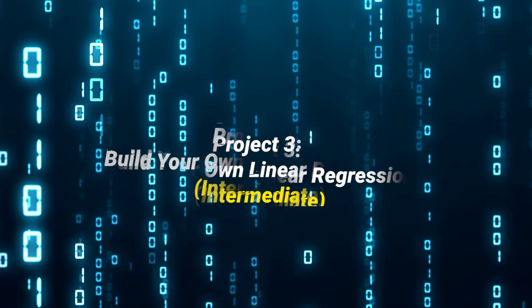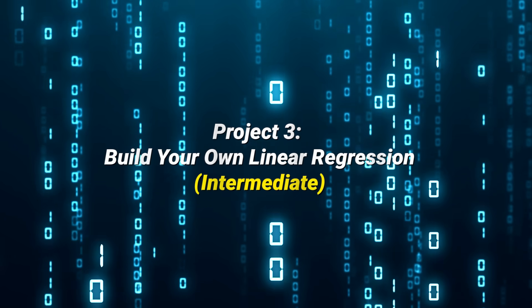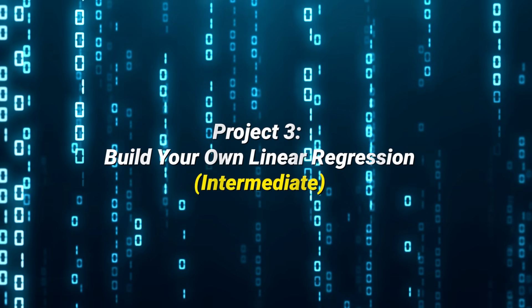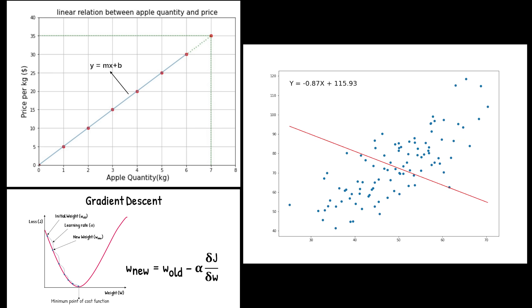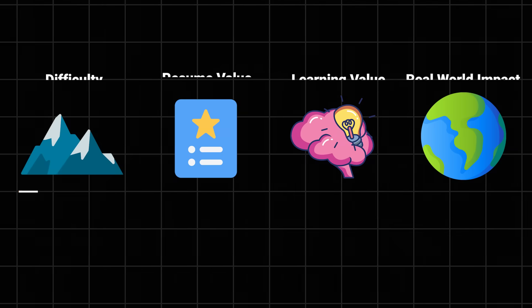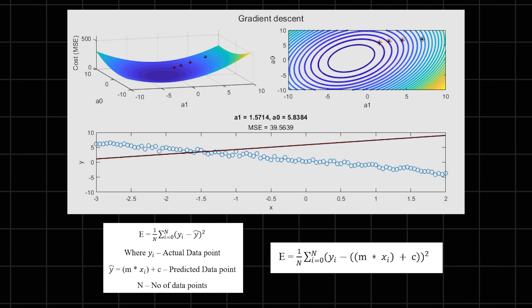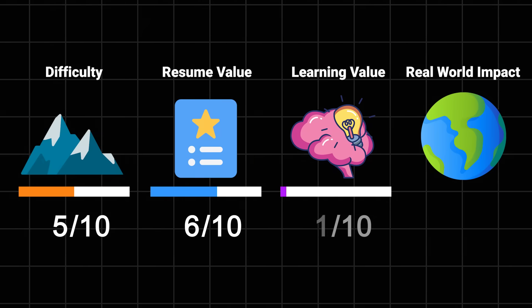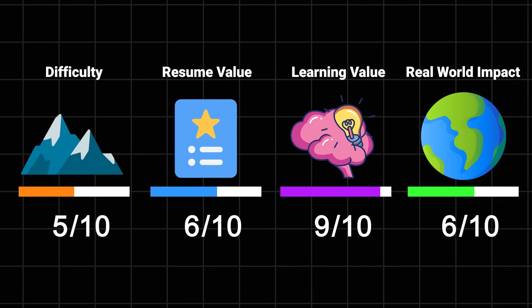Build your own linear regression. Wait, what? Why are we jumping to this already? Because if you can't understand the basics of how machine learning works, good luck explaining to your boss why your deep learning model is making weird predictions. You'll build linear regression from scratch - no scikit-learn allowed. Trust me, when you're debugging a neural network at 2am someday, you'll thank me for making you learn this. Difficulty: 5 out of 10. Resume value: 6 out of 10 because it shows you actually understand what's happening under the hood. Learning value: 9 out of 10. I'll give it a 6 out of 10 for impact because understanding how models actually work under the hood will save you countless hours of debugging in your career.